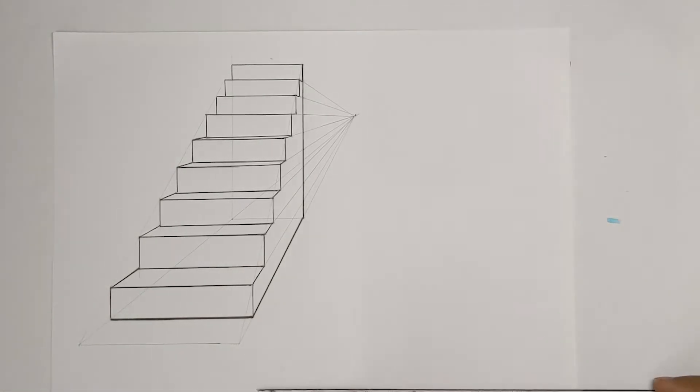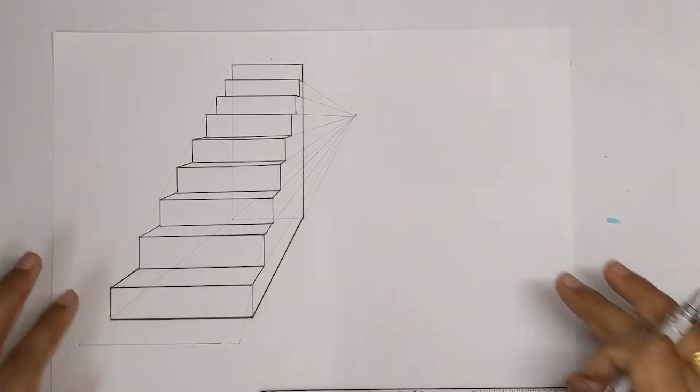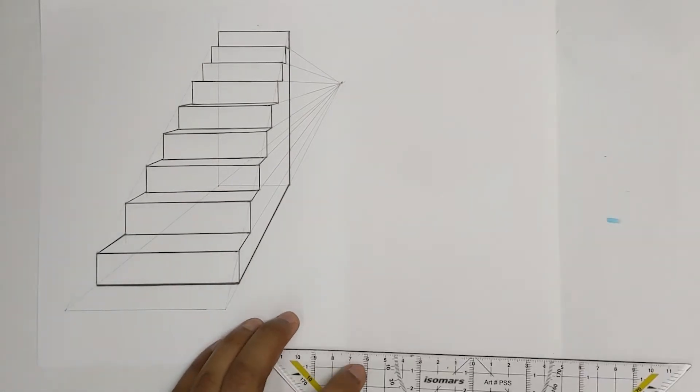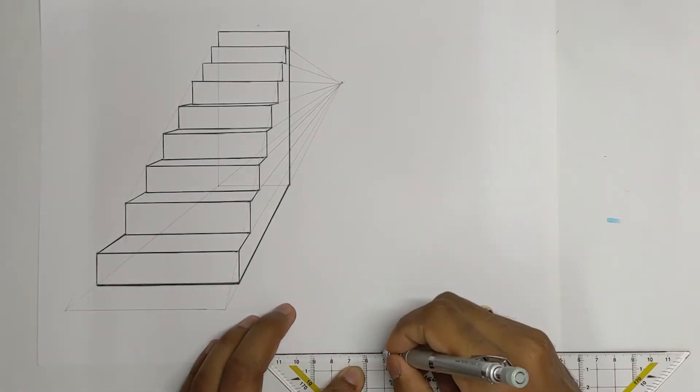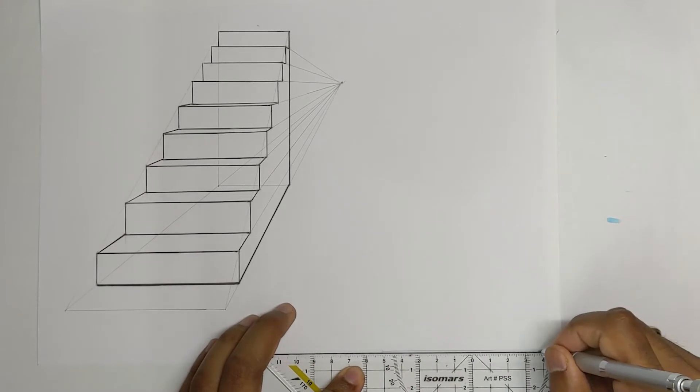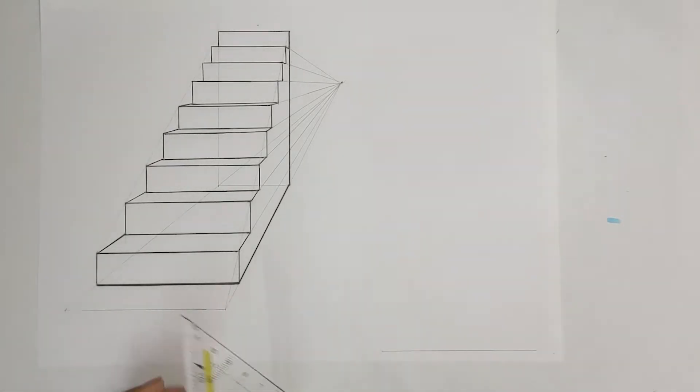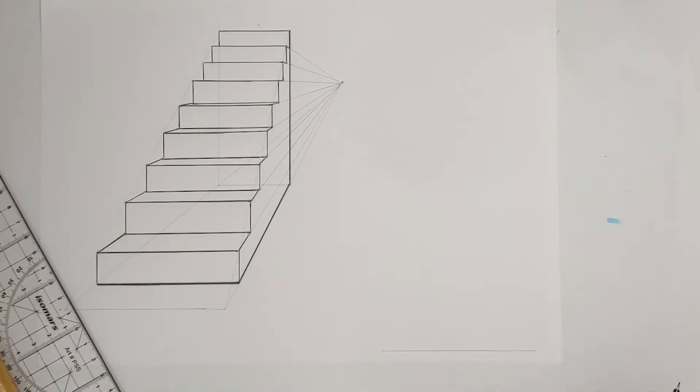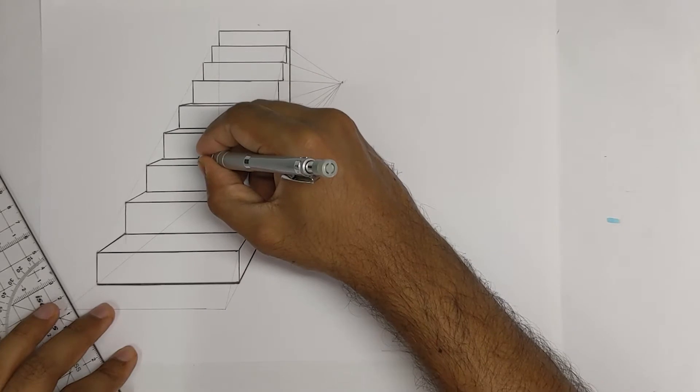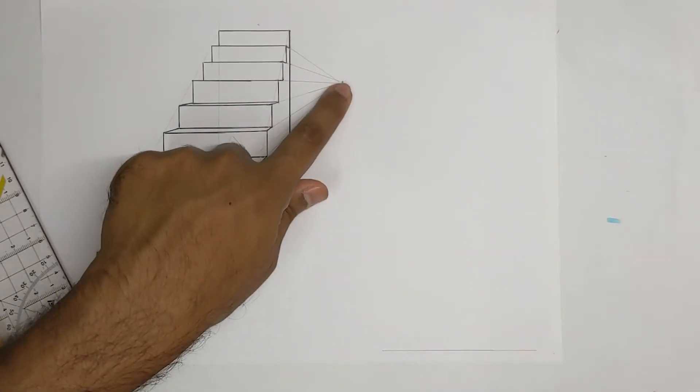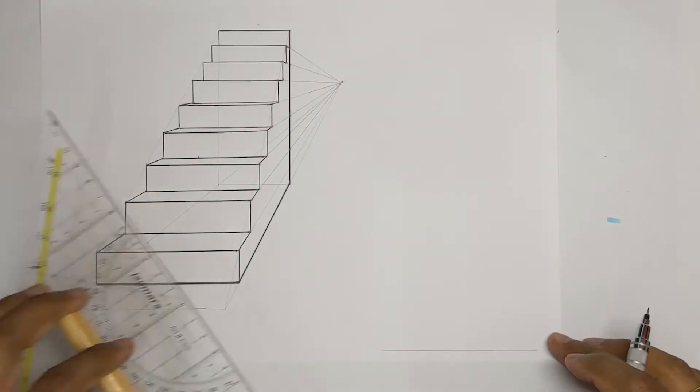We begin by drawing the ground plane as usual. So let's say this is my ground plane and for this example we are going to choose a vanishing point which is somewhere over here. We are not going to choose this one just to change things a bit.